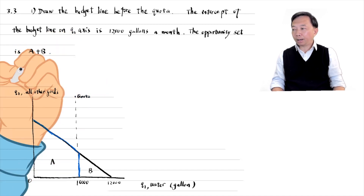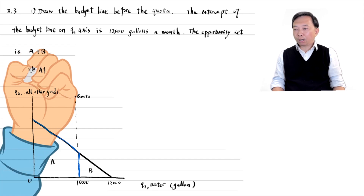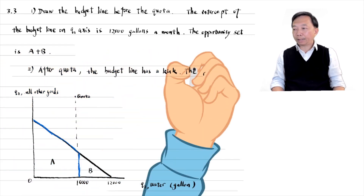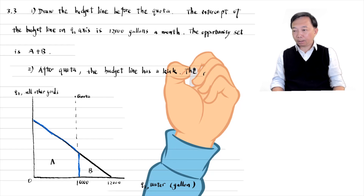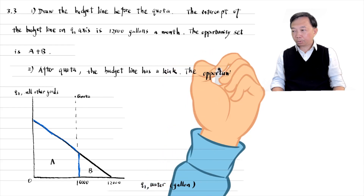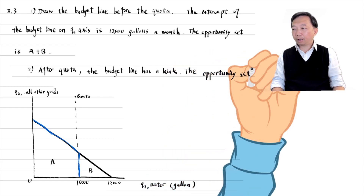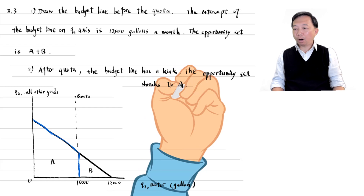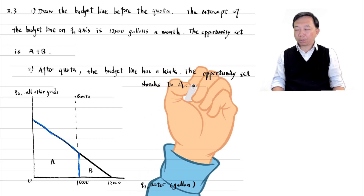In the second step, we draw the budget line after the quota. The vertical dashed line at 10,000 indicates the quota. The new budget line has a kink, and the opportunity set shrinks to the area of A. The consumer has fewer opportunities because of the quota.